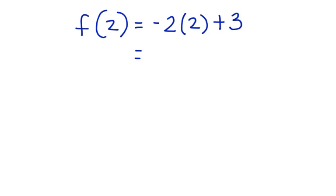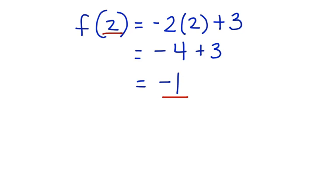Now let's evaluate the right side of the equation. We have negative 4 plus 3, and finally we have negative 1. Remember that the function of x is interchangeable with y. So if you look at these two values — the 2 for x and the negative 1 for the output, or the y value — you can see that this also forms an ordered pair. We can say that we have the ordered pair (2, negative 1).